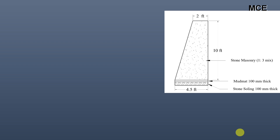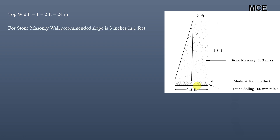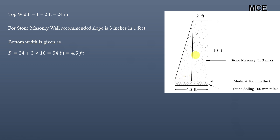For the US conventional unit stone masonry wall: top width is 2 feet or 24 inches, wall depth is 10 feet. The recommended slope for stone masonry is 3 inches per foot — you may also use 2.5 or 3.5 inches per foot depending on soil conditions, but 3 inches per foot keeps the wall stable. So bottom width = 24 + 3 × 10 = 54 inches or 4.5 feet.